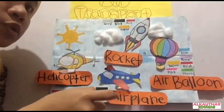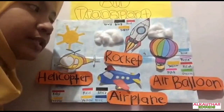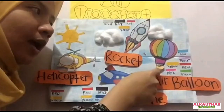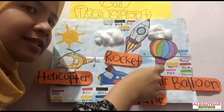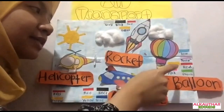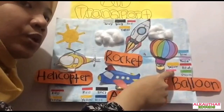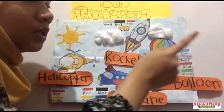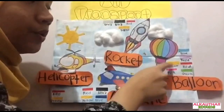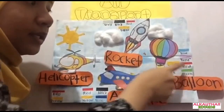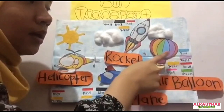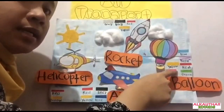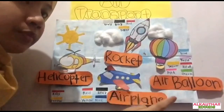Next, we move to the air balloon. Can you see the colors of the air balloon? Yes! It has six colors, which are blue, purple, yellow, red, pink, and the last one, green. Good job!